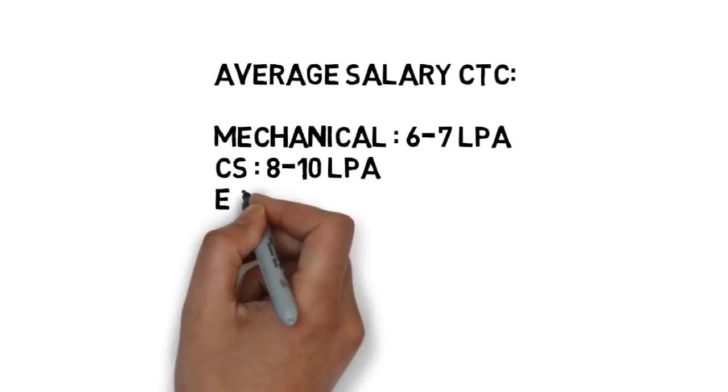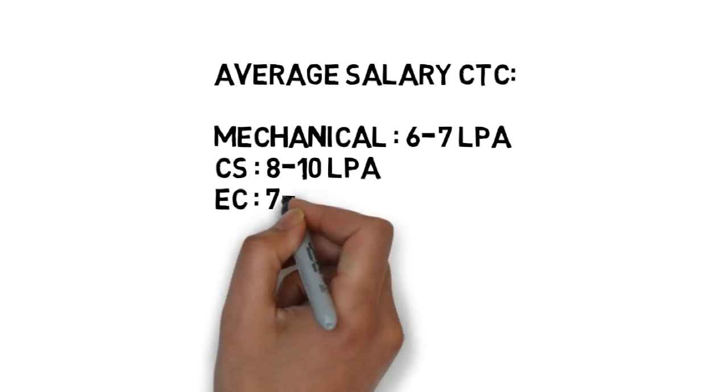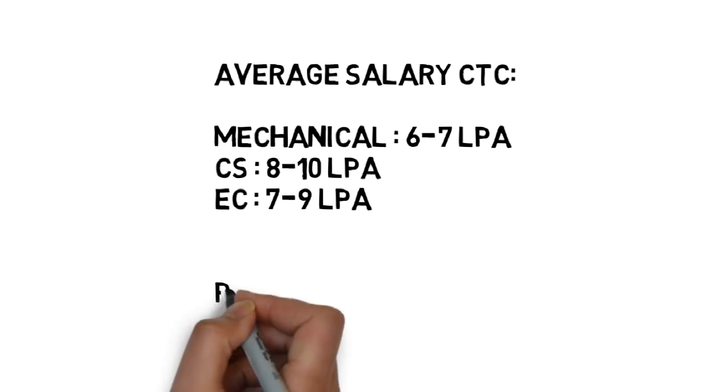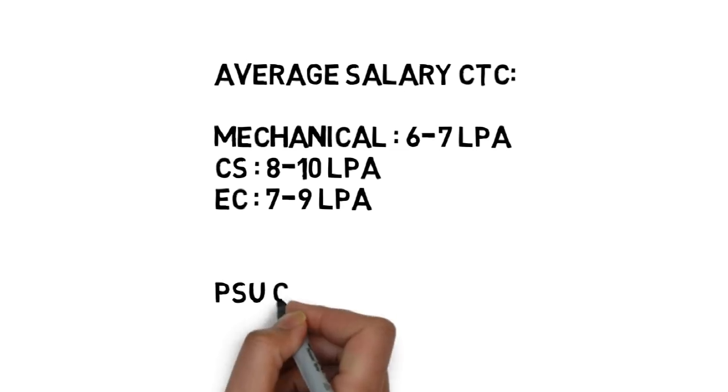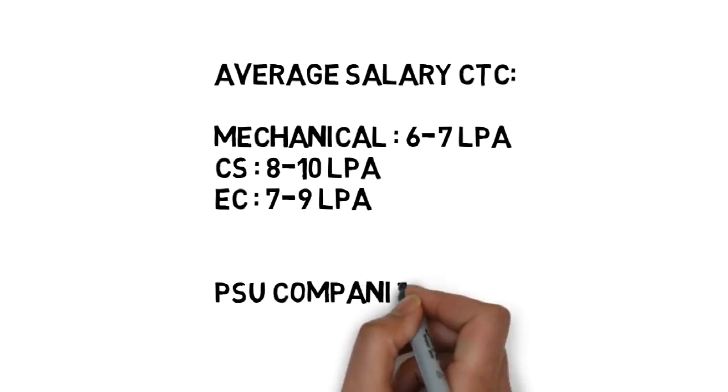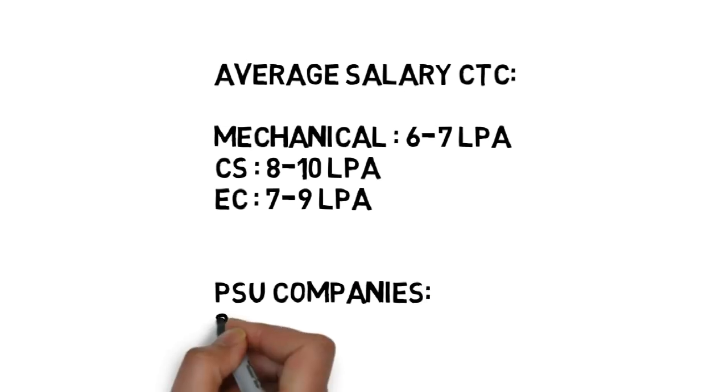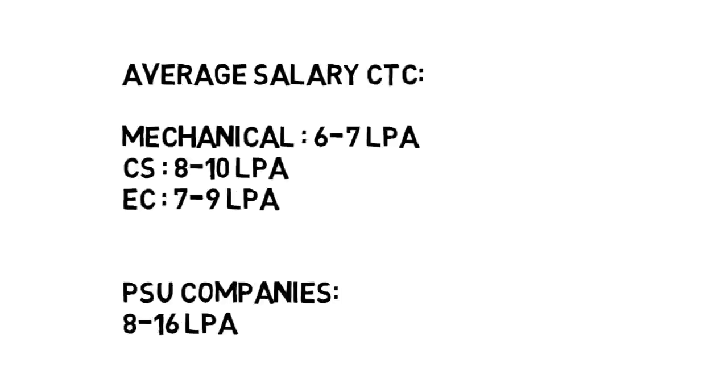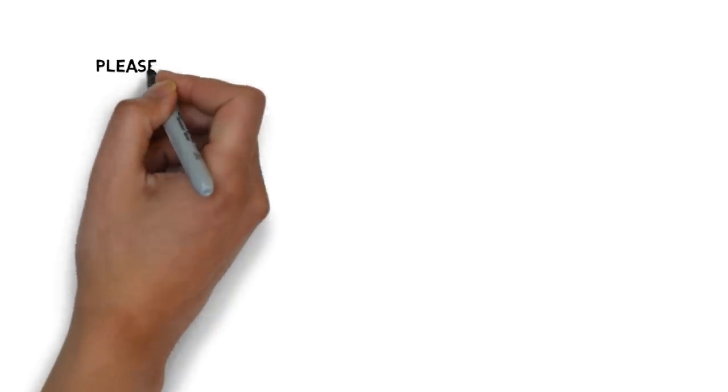So it's not a very hard and fast rule that okay, I will get 6 to 7 lakhs only. You can get even 14, you can get even 5. For CS it's a little bit higher - 8 to 10 lakhs. For electronics it's like 7 to 9 lakhs per annum. PSU companies, that was for the private - PSU companies have their pay packages ranging from 8 lakh to 16 lakhs per annum. So that was a very generic idea about the salaries.